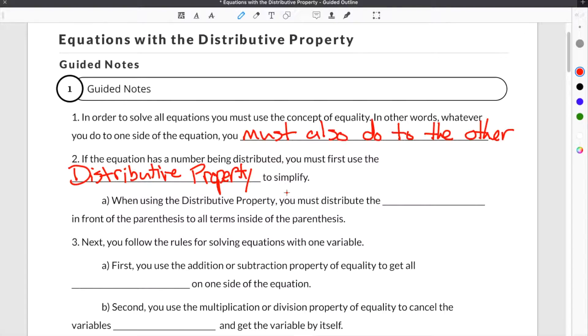When using the distributive property, you must distribute the constant in front of the parentheses to all terms inside of the parentheses. And when we're talking about constant here, we are talking about the number that is in front of the parentheses.